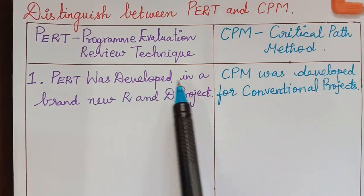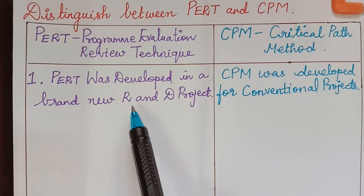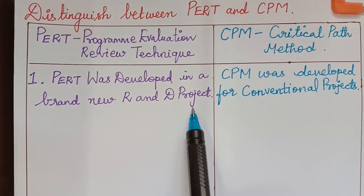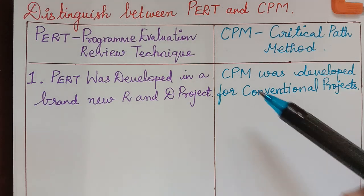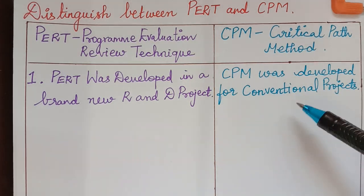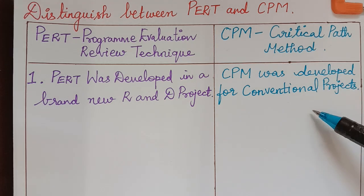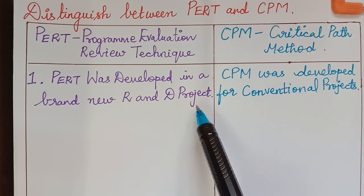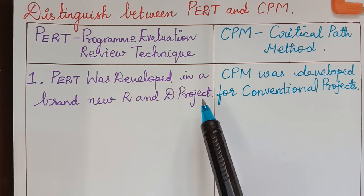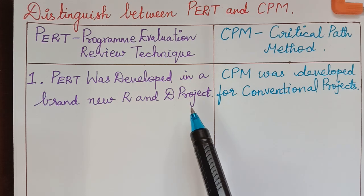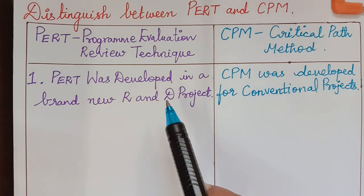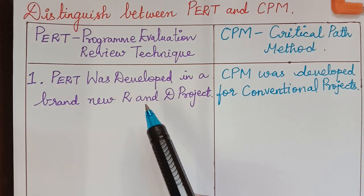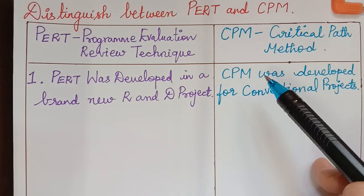The first difference is: PERT was developed for brand new research and development projects, whereas CPM was developed for conventional projects, that is routine projects. When the project is of a research type and may be uncertain, PERT will be used. When it is a routine task, CPM will be used.